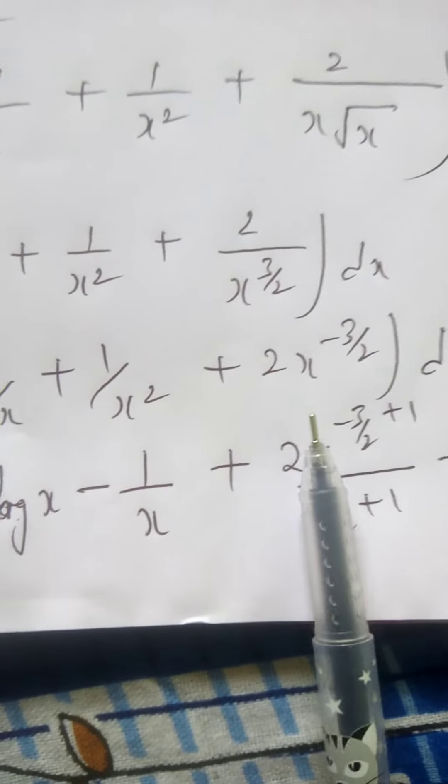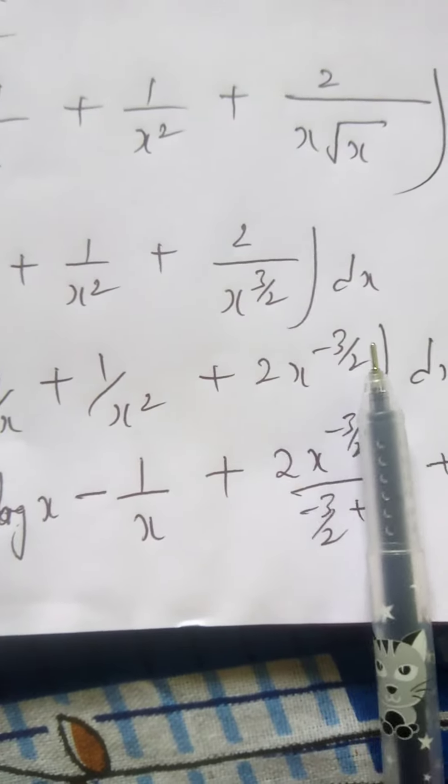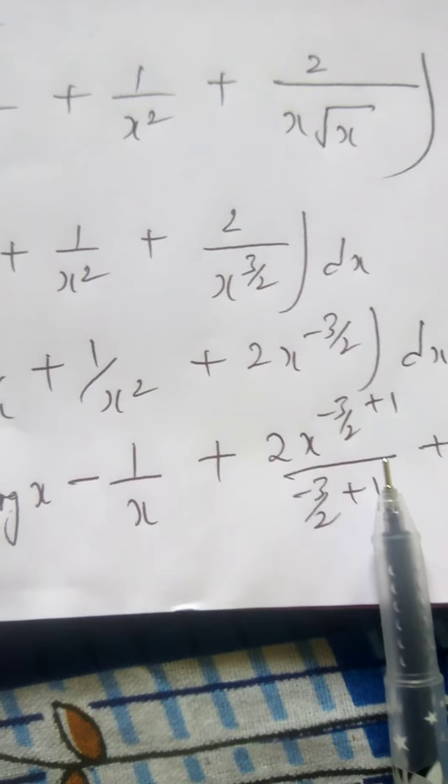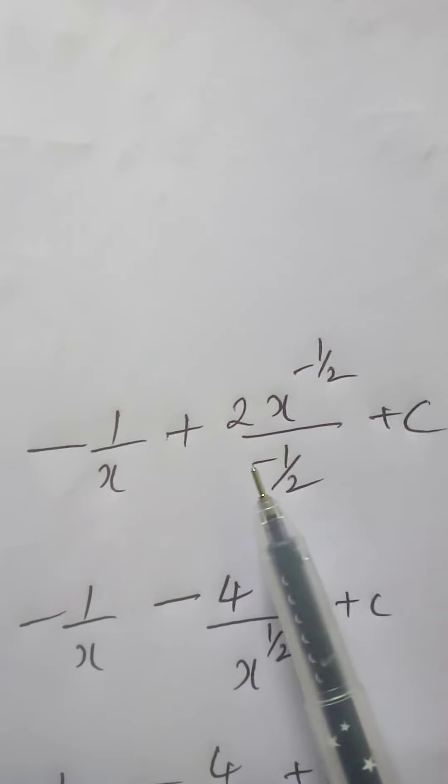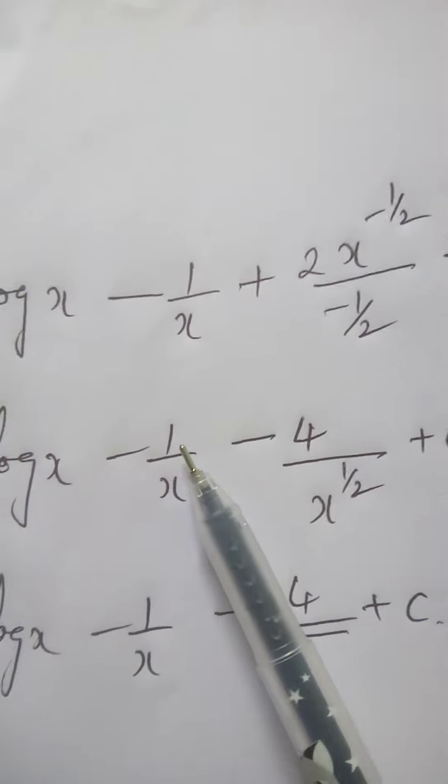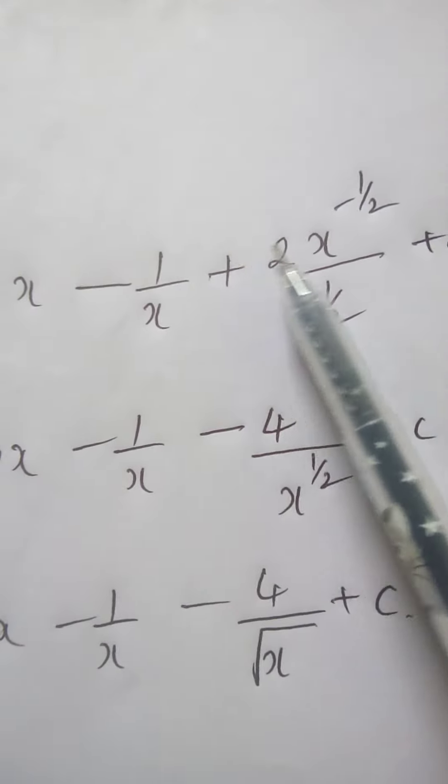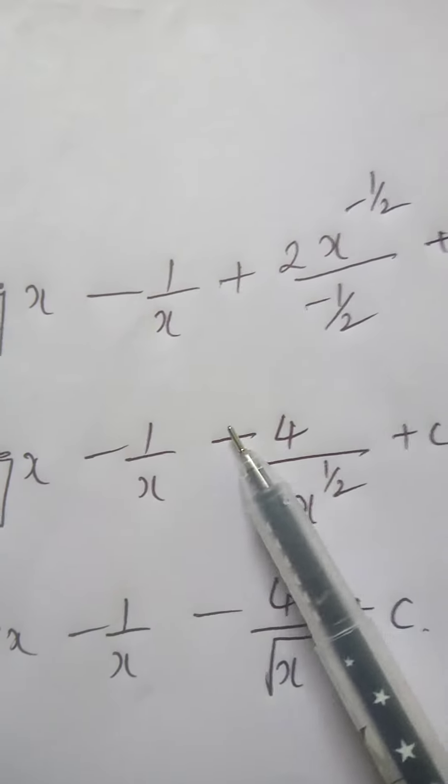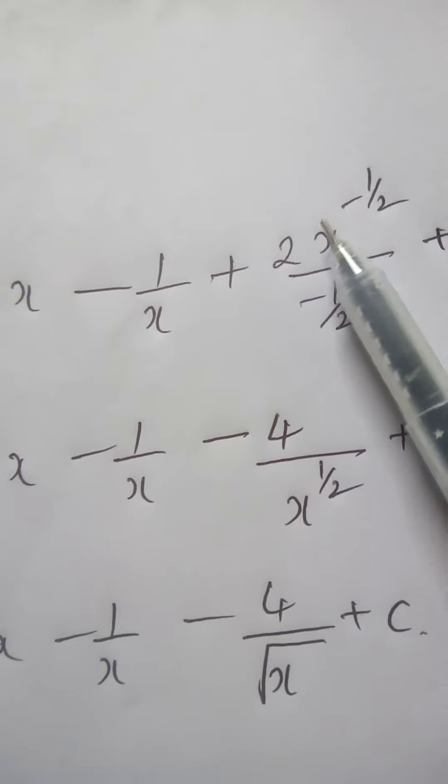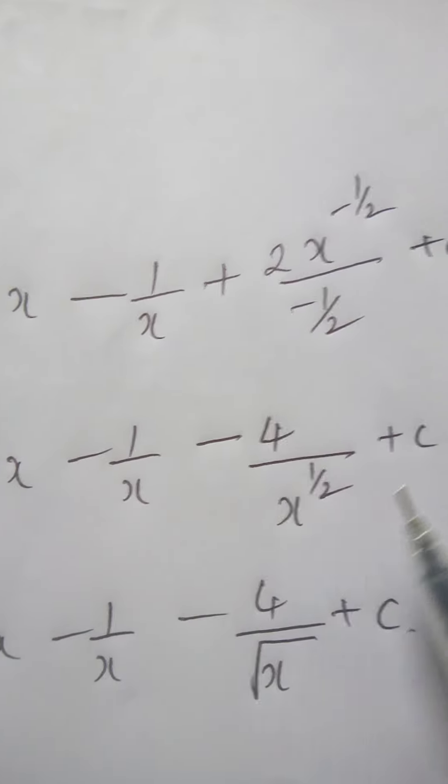Integral of 1 by x square is minus 1 by x. And this is, it will become x power minus 3 by 2 plus 1 by minus 3 by 2 plus 1. So this will become log x minus 1 by x plus 2x power minus 1 by 2 by minus 1 by 2. So log x minus 1 by x. This 2 goes up. 2 to the 4. Negative sign will come here. 4. And this x power minus 1 by 2 goes in the denominator plus c.